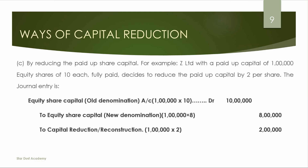The third way is by reducing the paid-up share capital. For example: Z Limited with a paid-up capital of 1 lakh equity shares of Rs. 10 each, fully paid, decides to reduce the paid-up capital by Rs. 2 per share. The journal entry is: Equity Share Capital A/c (Rs. 10 lakhs) Dr. to Equity Share Capital A/c (Rs. 8 lakhs) and to Capital Reduction or Reconstruction A/c (Rs. 2 lakhs). No refund is made in this case.